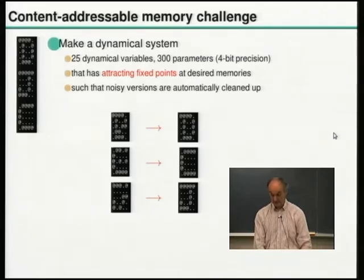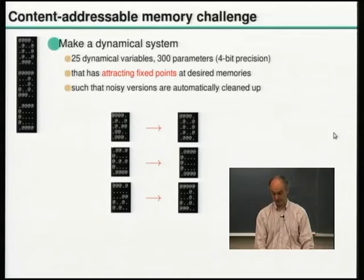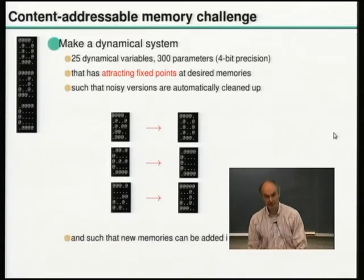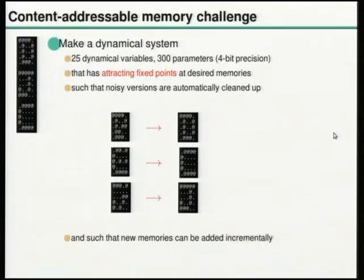That sounds already hard enough. An additional constraint is that when your brain encounters a new memory, you don't buy extra neurons — you carry on using the same brain and make minor changes to it. We don't know exactly how, but by those changes, possibly requiring a little sleep, you get new memories added to the existing hardware.